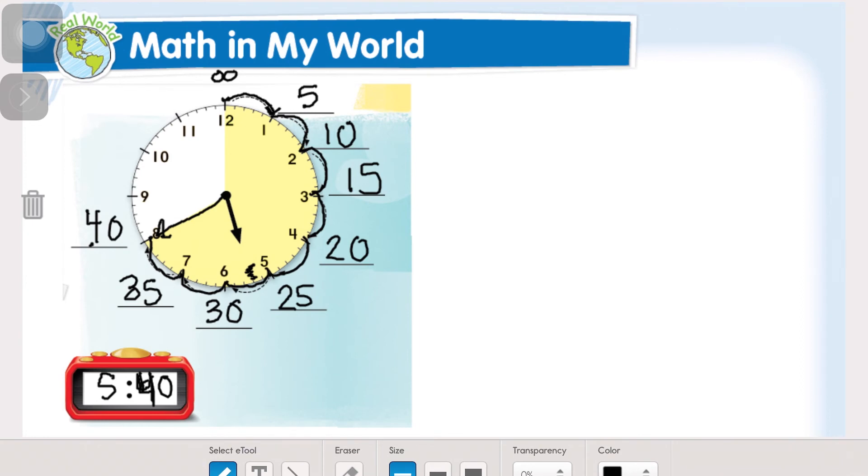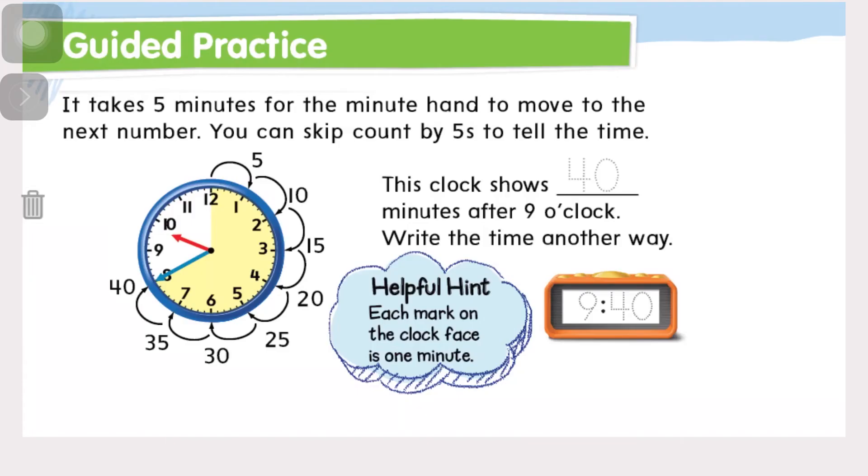Okay, so now let's go on to our guided practice. You can turn to page 620. It says it takes five minutes for the minute hand to move to the next number. You can skip count by fives to tell the time. This clock shows 40 minutes after nine o'clock. Write the time another way. So we just did this with a different hour, but this is going to show 40, and the hour is 9, so it's 9:40.